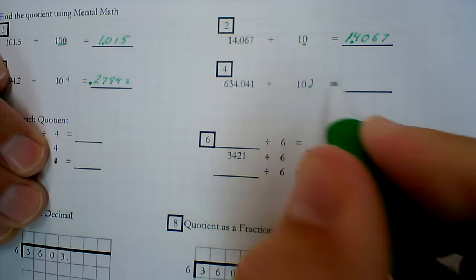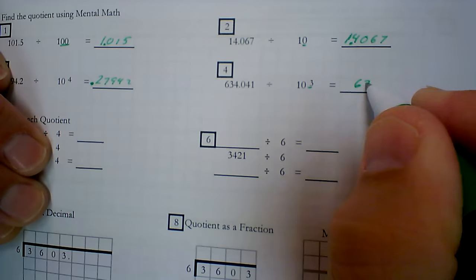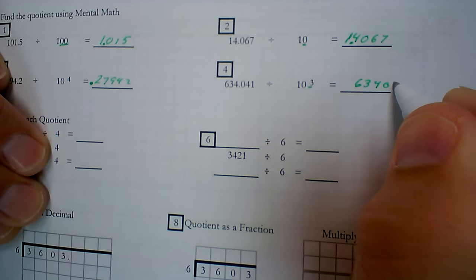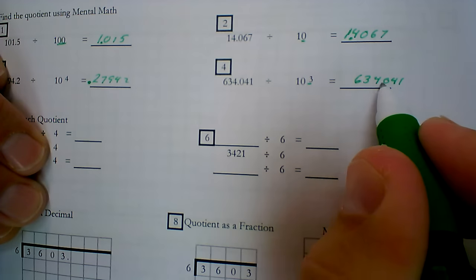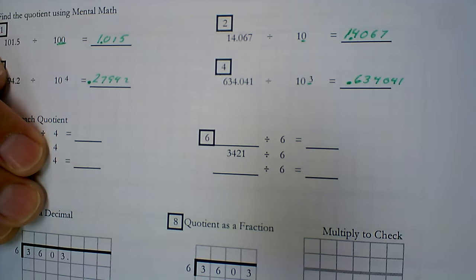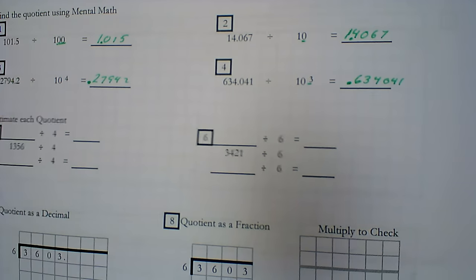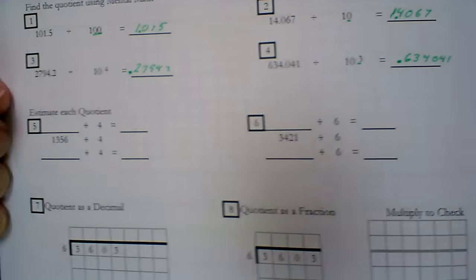Here, my exponent is 3. So that tells me I'm going to move the decimal point three times. 6, 3, 4, 0, 4, 1 are the digits. I'm going to move it three times. It was right here. So 1, 2, 3. There's my answer. So that is dividing by powers of 10.